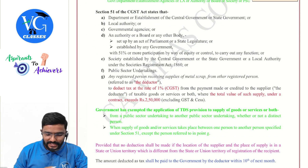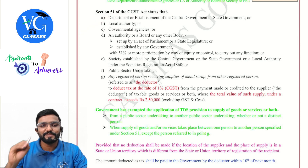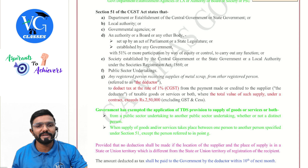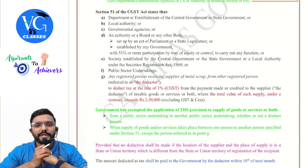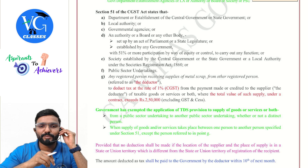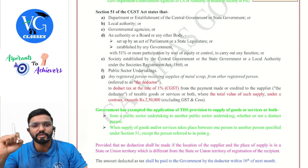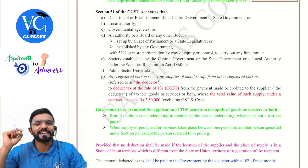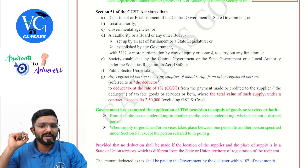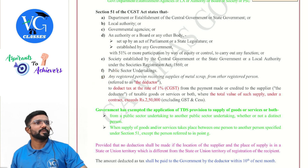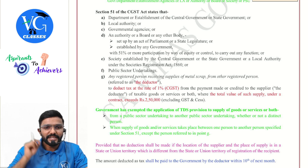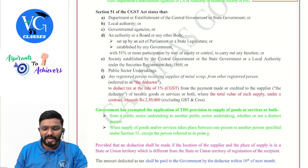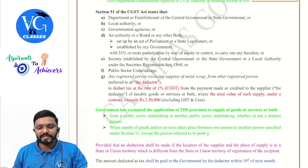Section 51 of CGST Act states that a department or establishment of the central government or state government, or local authority, governmental agencies, or an authority, board, or any other body set up by an Act of Parliament or state legislature, or established by any government with 50% or more participation by way of equity or control to carry out any function, or a society established by the central, state government, or local authority under the Societies Registration Act 1860, or a public sector undertaking — these are the specified deductors. And now, one more new person has been added by amendment.